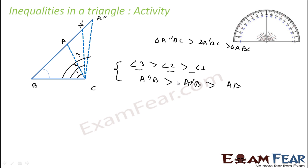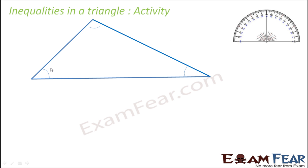So we can conclude that the side is directly proportional to the opposite angle. If you increase the opposite side, the opposite angle will increase. If you increase the side from AB to A-dash B, the angle increases from angle 1 to angle 2. Increase the side from AB to A-double-dash B, the opposite angle increases from angle 1 to angle 3.